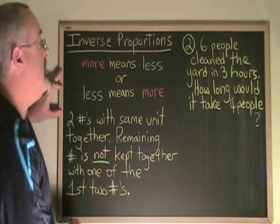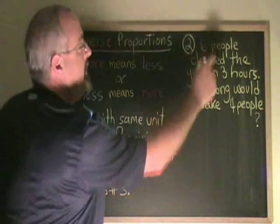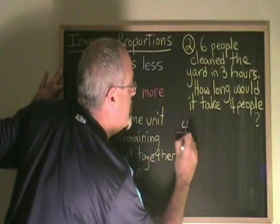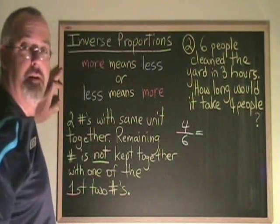The two numbers with the same unit are the six people and the four people. So I'm putting them together on the left, smaller one on top, as is my habit.